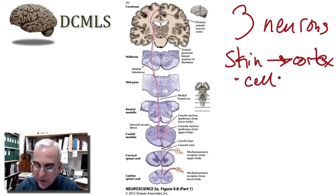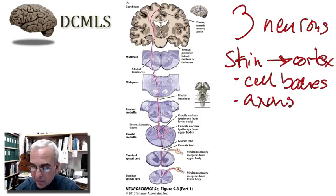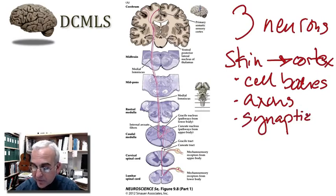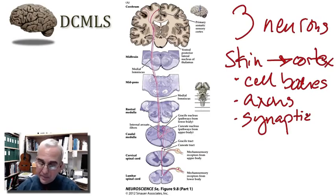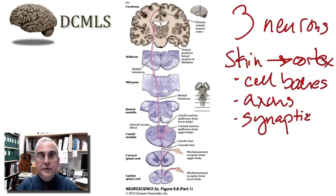Consider where their cell bodies are, the distribution of their axons, and be able to discuss and illustrate the location of the synaptic connections from one axon to the dendrites of another neuron in the serial pathway. Three things to focus on in this pathway and all the others: the location of cell bodies, the distribution of the axons of those cell bodies, and the locations of the synaptic junctions.